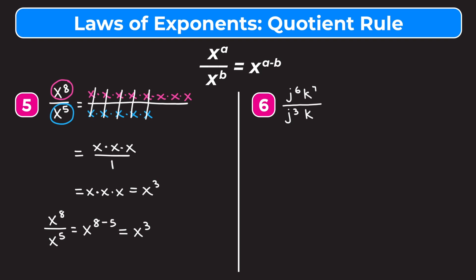Example six is j to the sixth times k to the seventh over j to the third times k to the first. We think of this as j to the sixth over j to the third, times k to the seventh over k to the first, and simplify each part separately. For j to the sixth over j to the third, we subtract: six minus three is three, giving j to the third. For k to the seventh over k to the first, seven minus one is six, giving k to the sixth. Our answer is j to the third times k to the sixth.